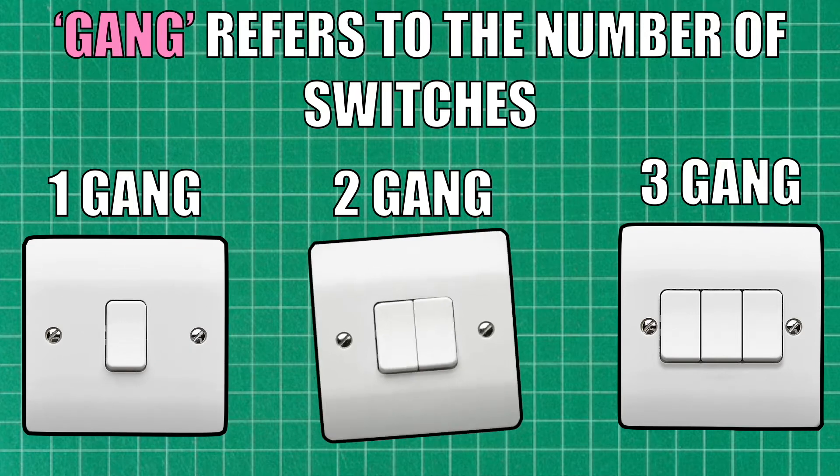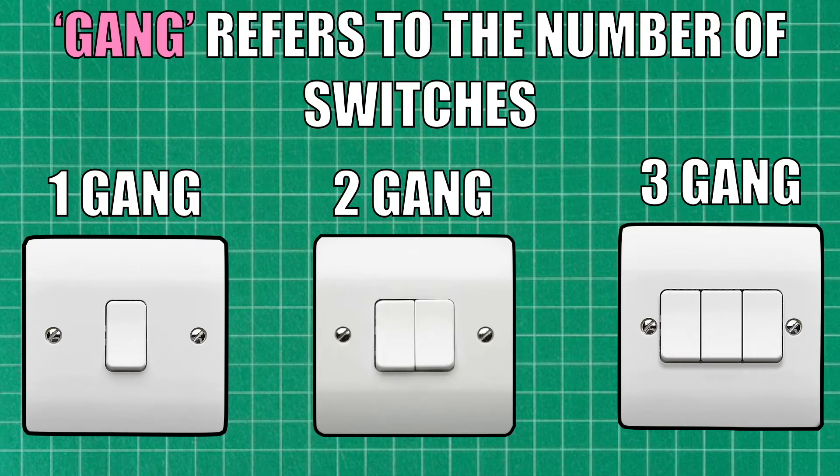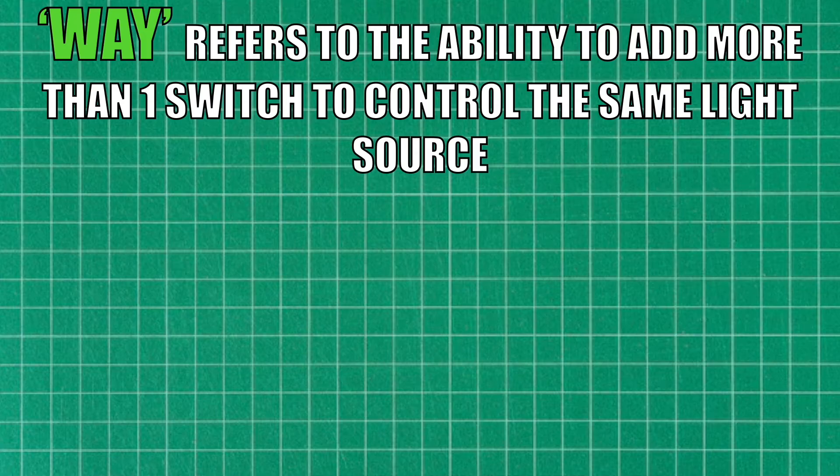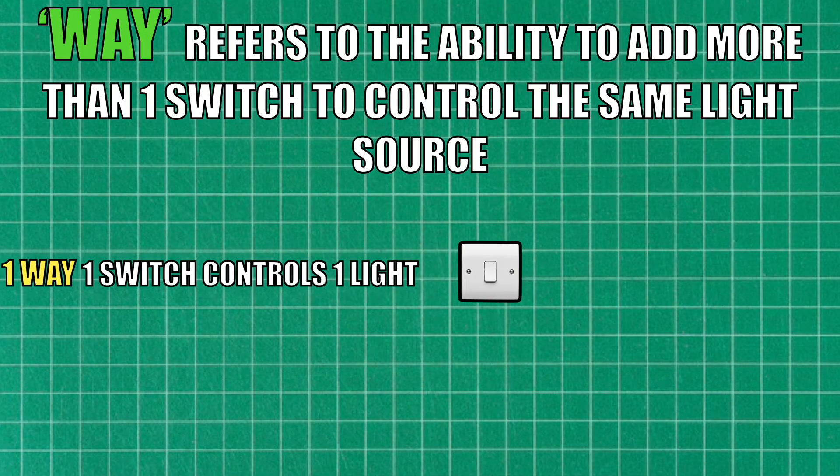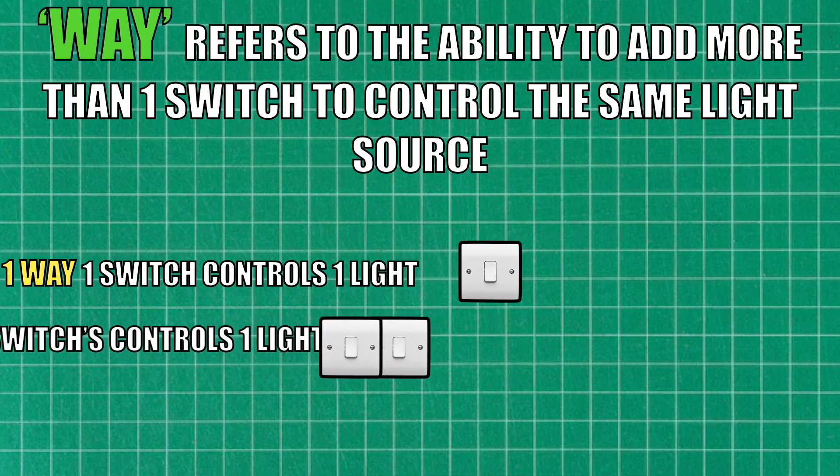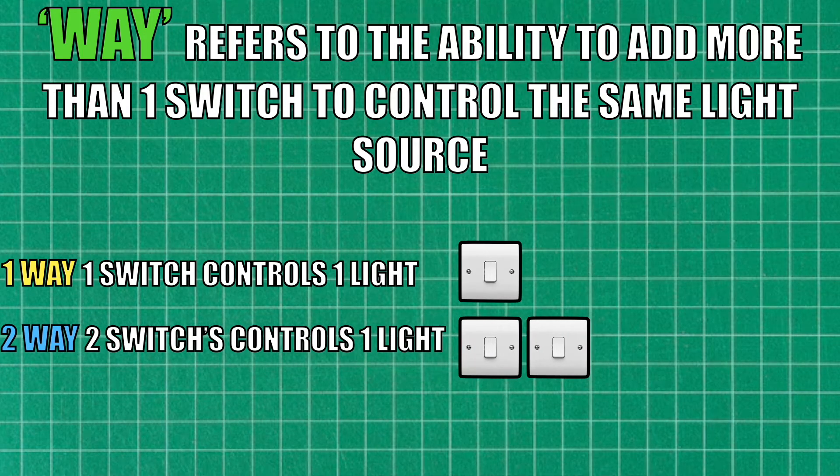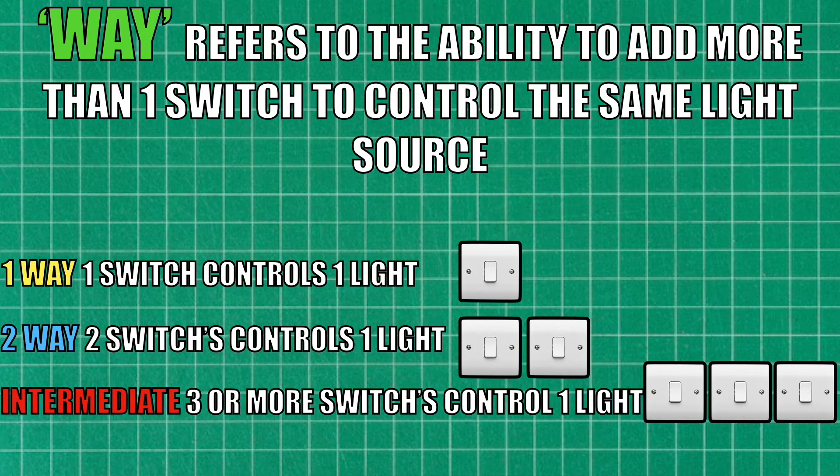And yep, you've guessed it, a three gang switch has three switches. And way simply means the ability to add more than one switch to control the same light source. So a one-way switch is used to control one light. If you need two switches to control that same light, you then need two two-way switches. And if you require three or more switches to control the same light, you will need an intermediate switch.